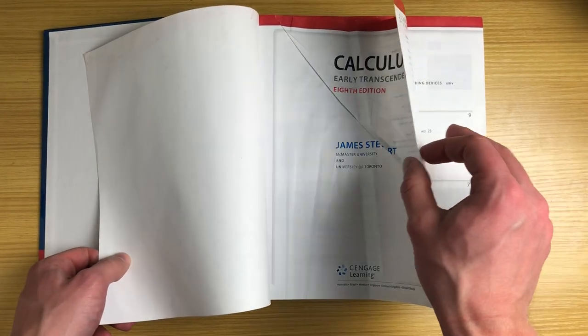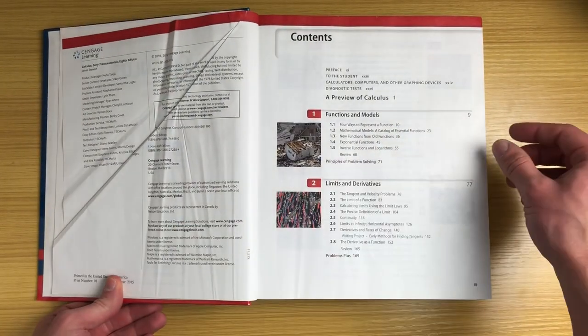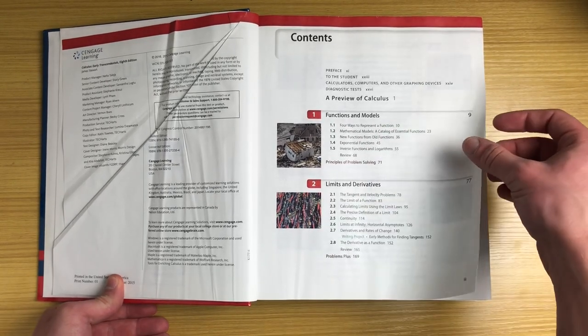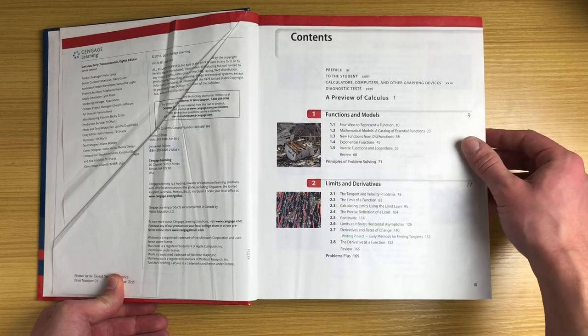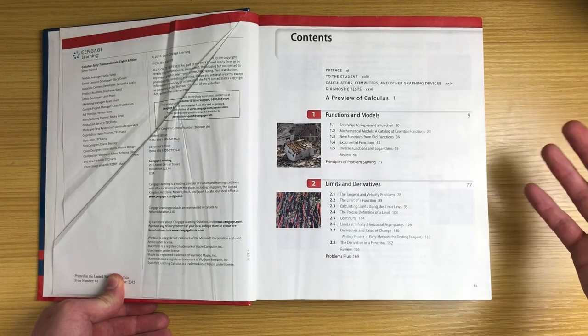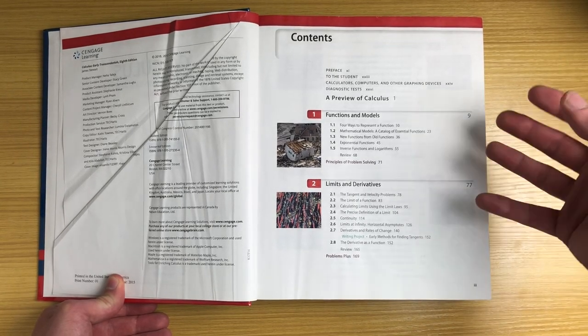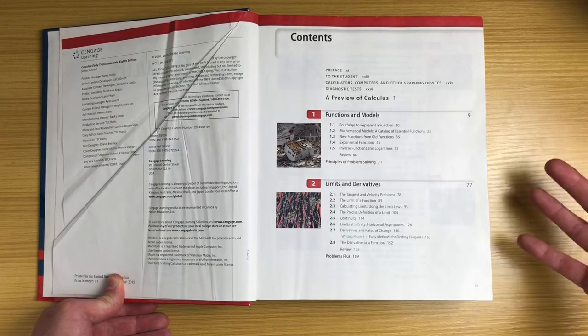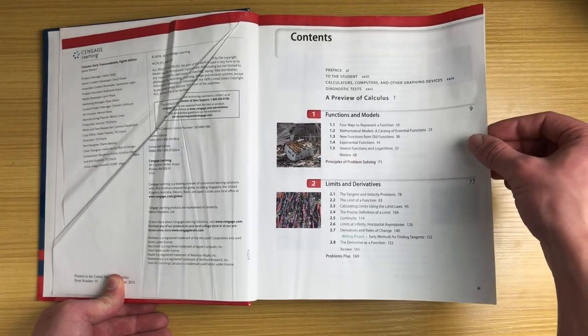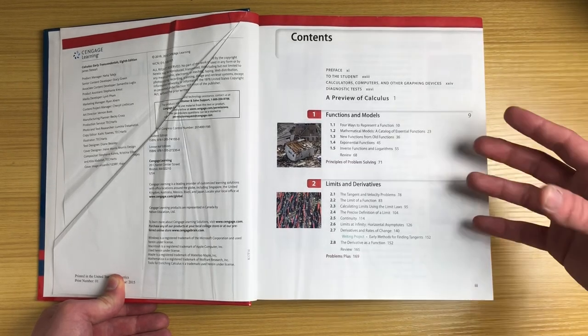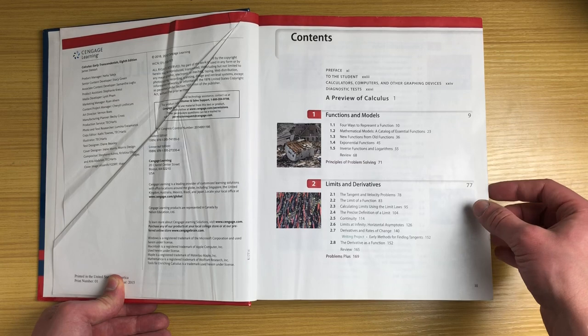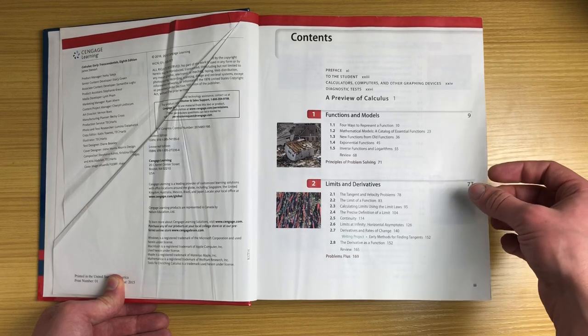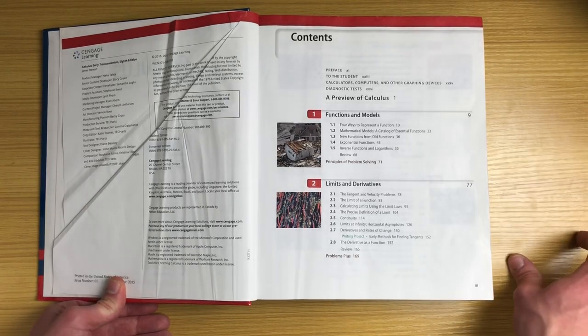You can see it's obviously quite a thick book, a little bent here. Looking at the contents of this book, functions and models. I don't know how essential this is, because going into calculus you should have a pretty good idea of what a function is. But I do like that if you need a quick review, there is a small section in chapter one on functions, different function representations, maybe a little bit of pre-calc stuff, exponential functions, logarithms, and inverses, things that are essential to calculus.